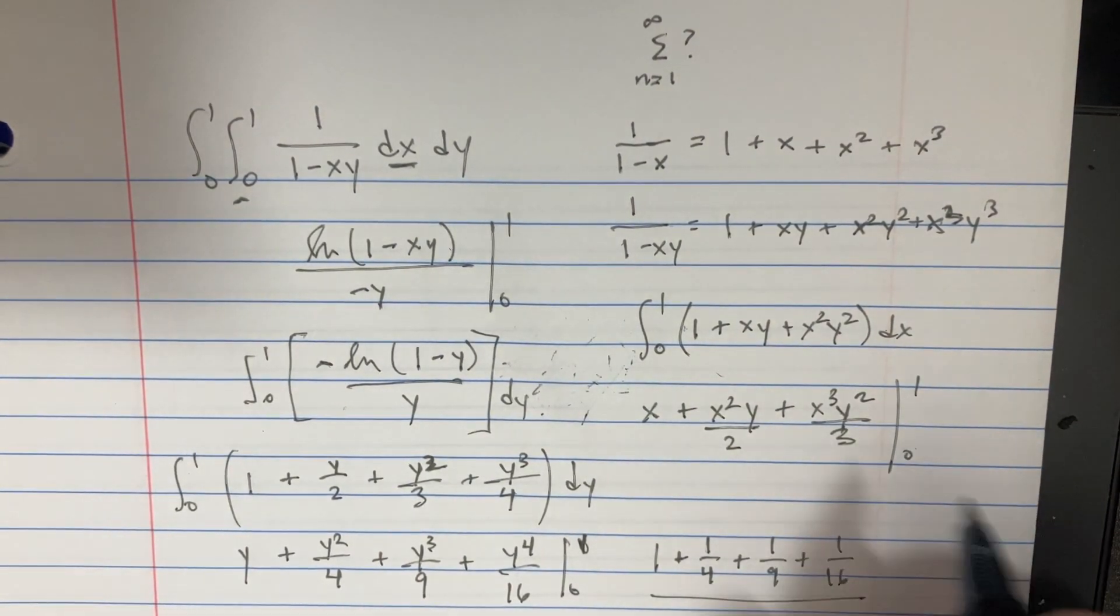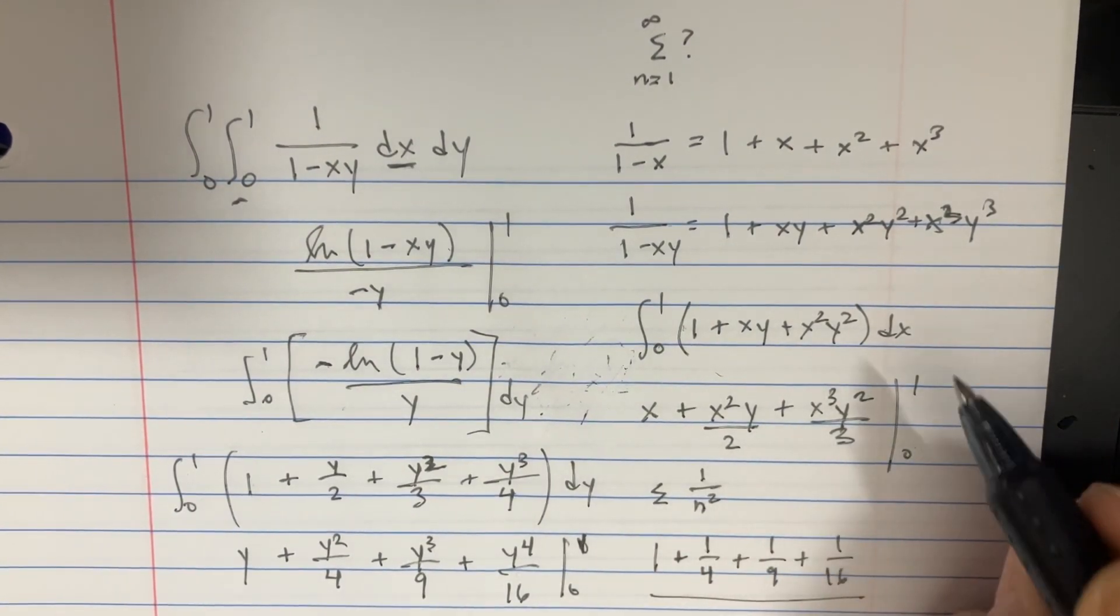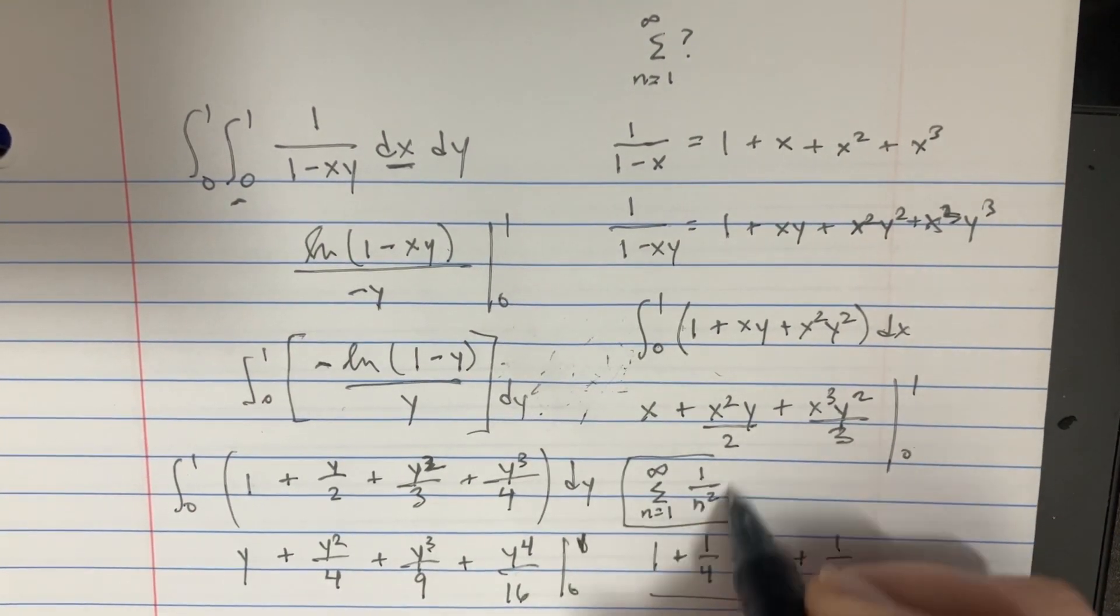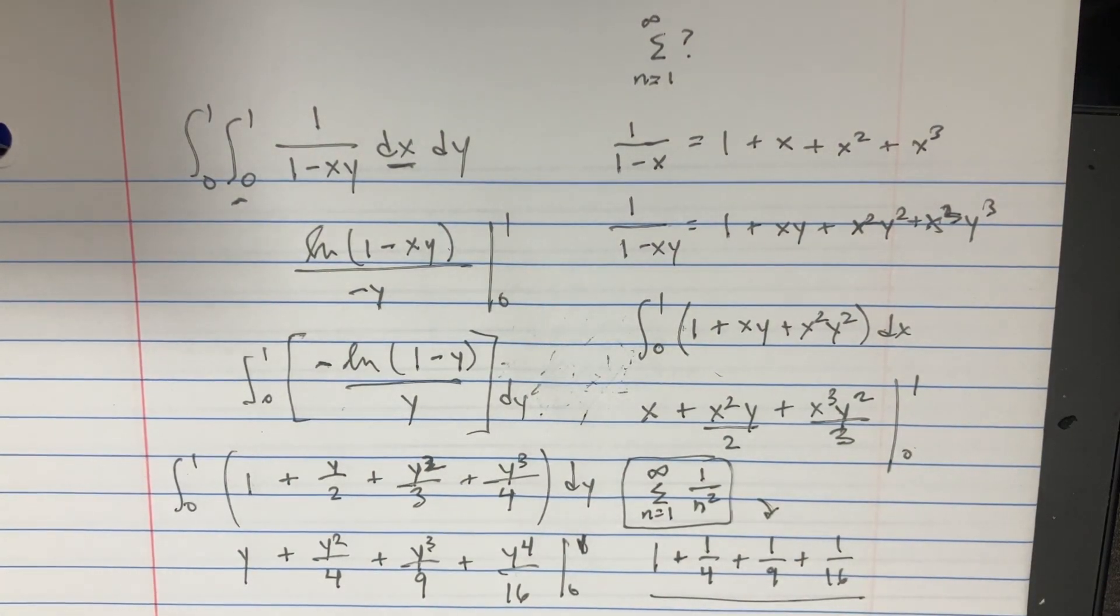And that'll give us like 1 plus 1 fourth plus 1 ninth plus 1 sixteenth. And that means that we could actually make this look like this, 1 over n squared, and then just go from n equals 1 to infinity, and we'll get this expression. So that would be the answer. It's crazy.